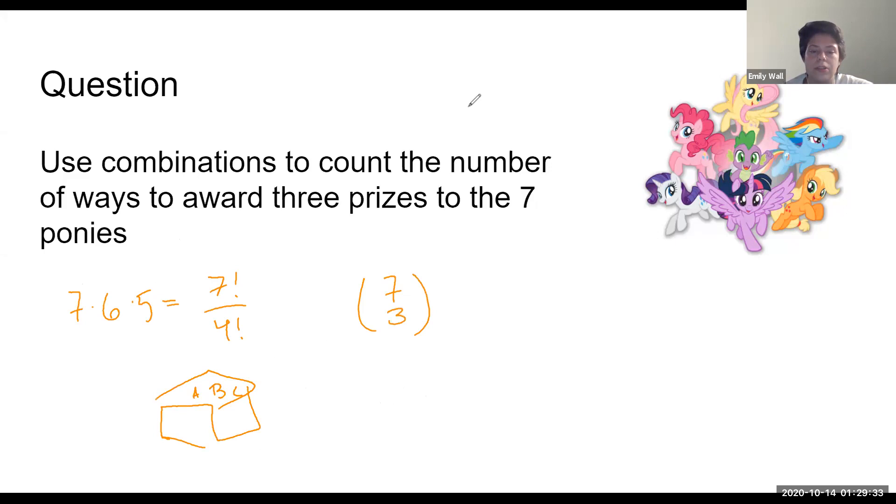Let's remember what seven choose three equals: seven factorial over three factorial four factorial. We want these two numbers to be equal.